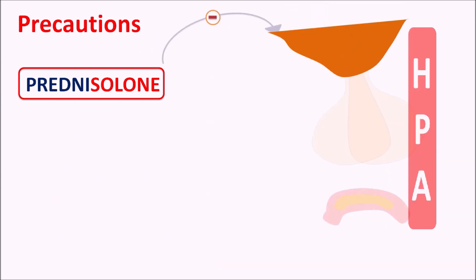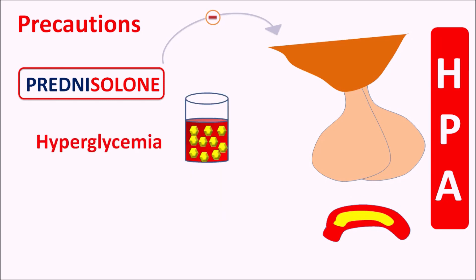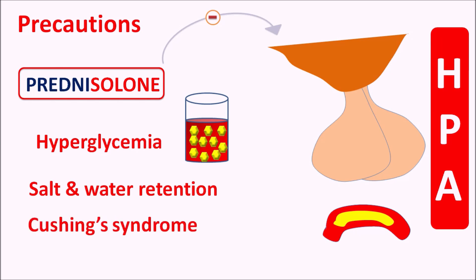This drug can suppress the HPA axis, resulting in increased glucose levels and hyperglycemia. It can also produce salt and water retention due to mineralocorticoid activity. It can precipitate Cushing's syndrome, resulting in facial edema and other symptoms related to excessive cortisol levels. That is why this drug should not be stopped suddenly — it should be slowly tapered to reduce any adrenal insufficiency or suppression of the HPA axis.